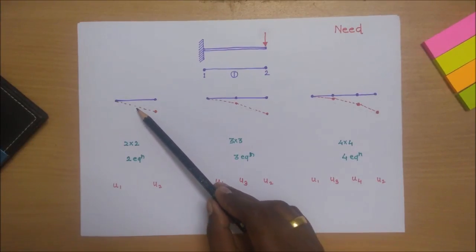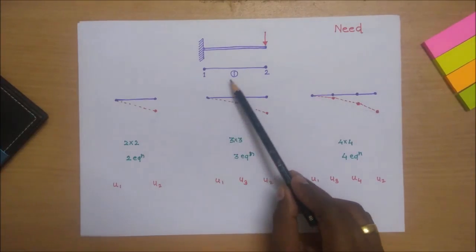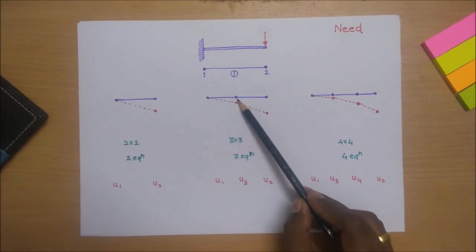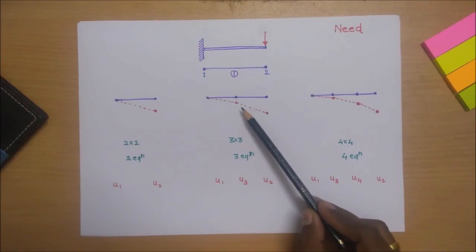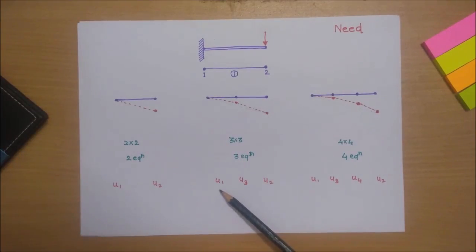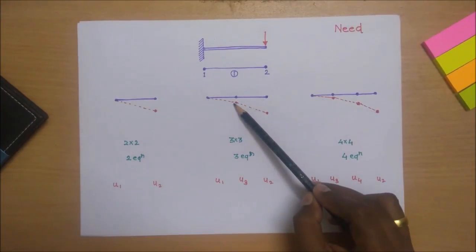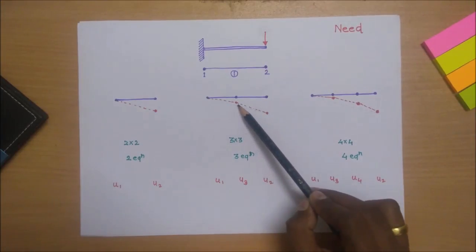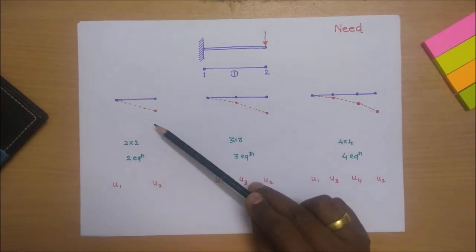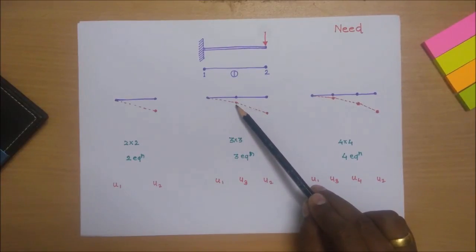Suppose we want to find the deformation at the middle point. Keeping this single element, we introduce one node at the middle point — this is called a quadratic element. We now get a 3x3 global stiffness matrix, three equations, and three deformations. When we join these three deformations, there is some error compared to the first problem, and this error is minimized for a more accurate result.